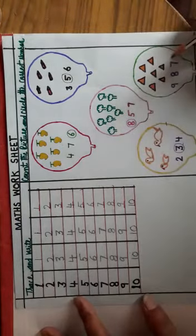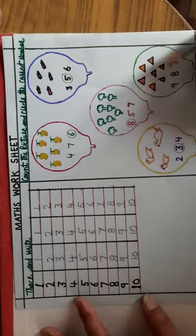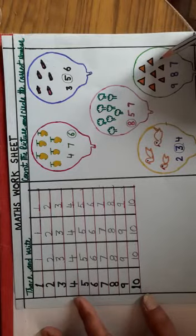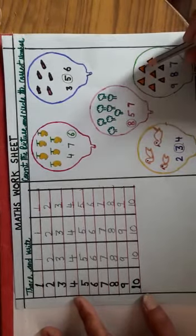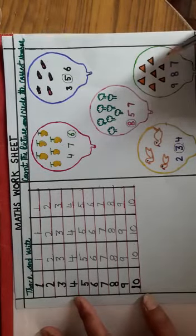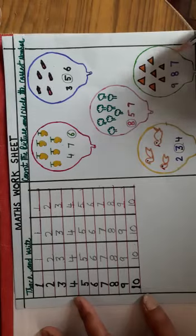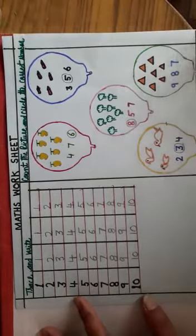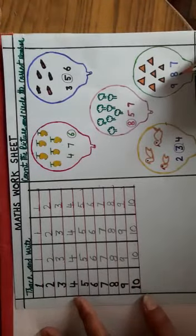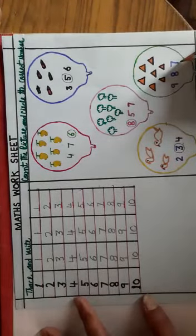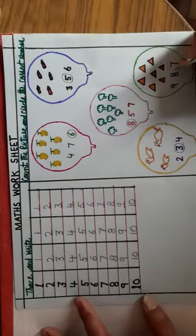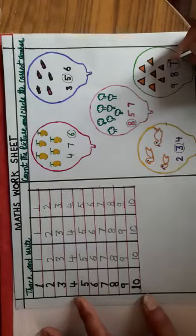Now last one is what is this? These are triangles. How many triangles are here? 1, 2, 3, 4, 5, 6, 7. There are 7 triangles. Where is number 7? This? No. This? No. Yes. This is number 7. Number 7 is circle.